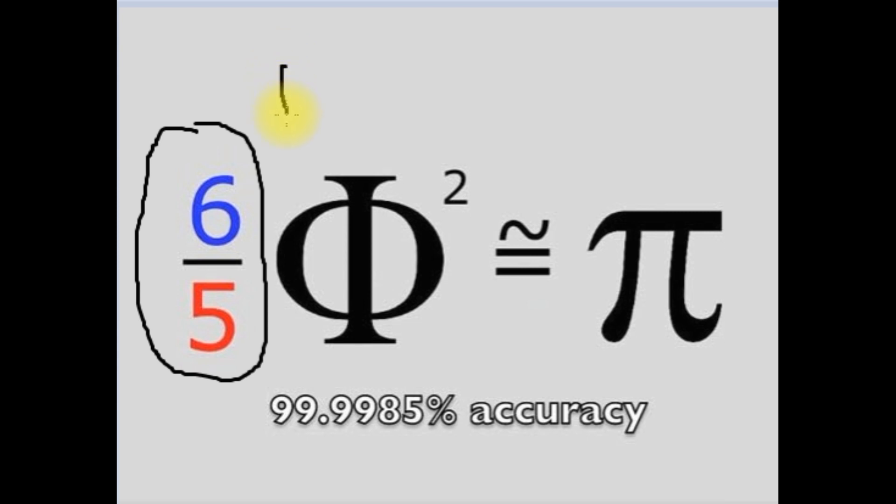The golden ratio, the golden mean, 1.618 is approximate phi.